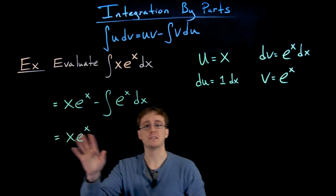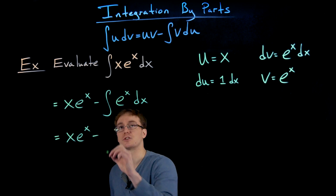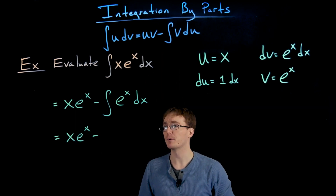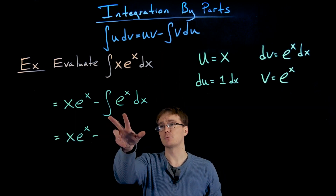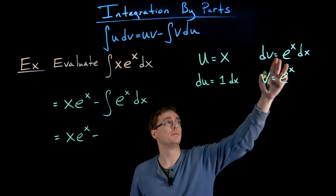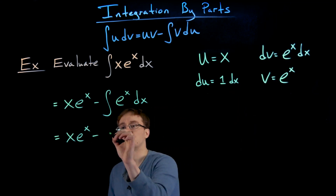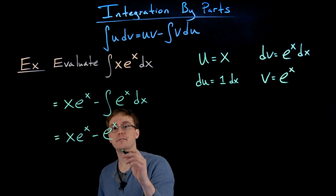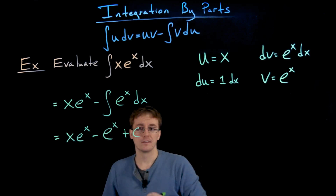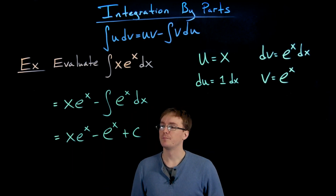The first piece requires no integration — it's already given to us from the formula. Now we subtract away the antiderivative of e to the x, and as we mentioned, that function is equal to its own antiderivative. We then include the constant of integration C, giving us our final answer.